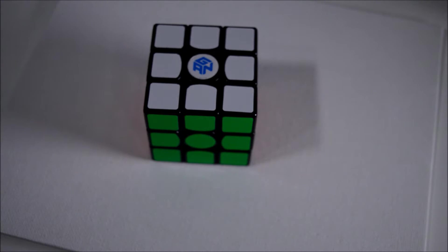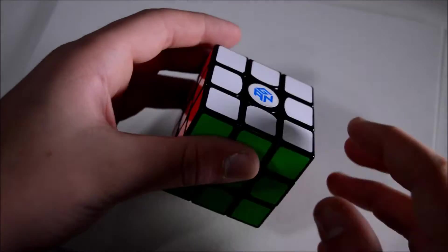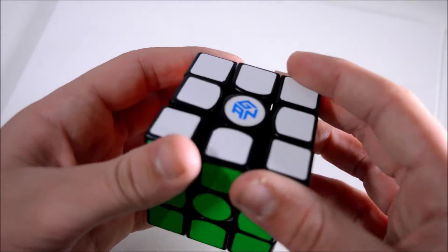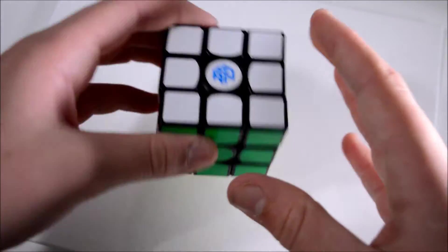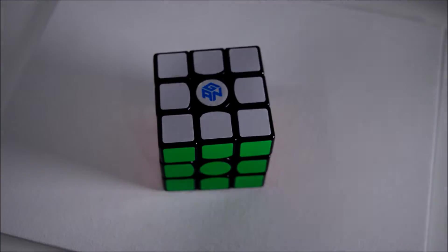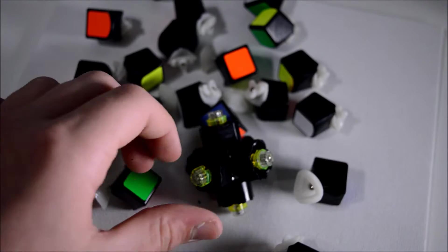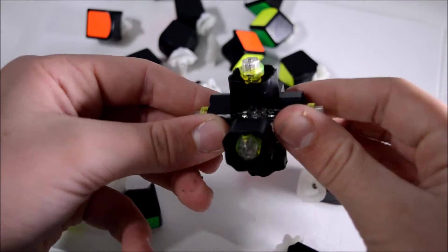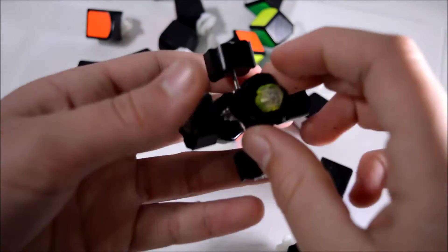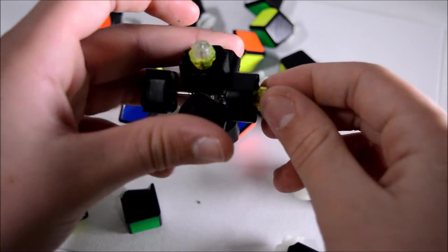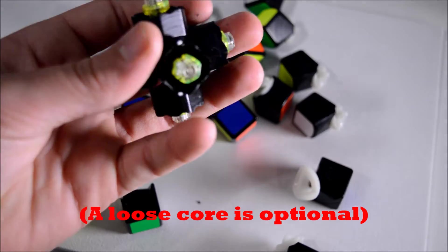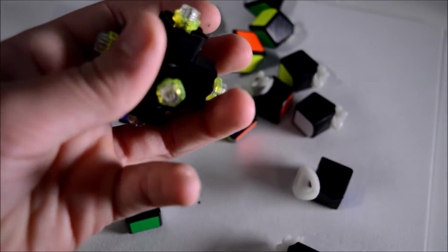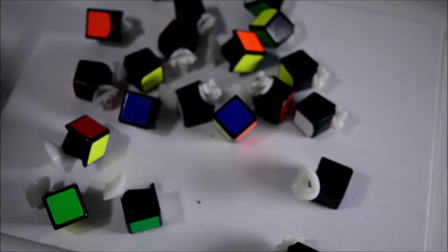All right so the first step to actually making your magnetic Gans Air is going to be to disassemble the cube. My cube is a little tight so I'm going to loosen this. Okay so I've got my cube disassembled and you should as well. The other thing is you're going to want these springs really really loose. It'll be easier for the assembly later but you're not going to need your core.